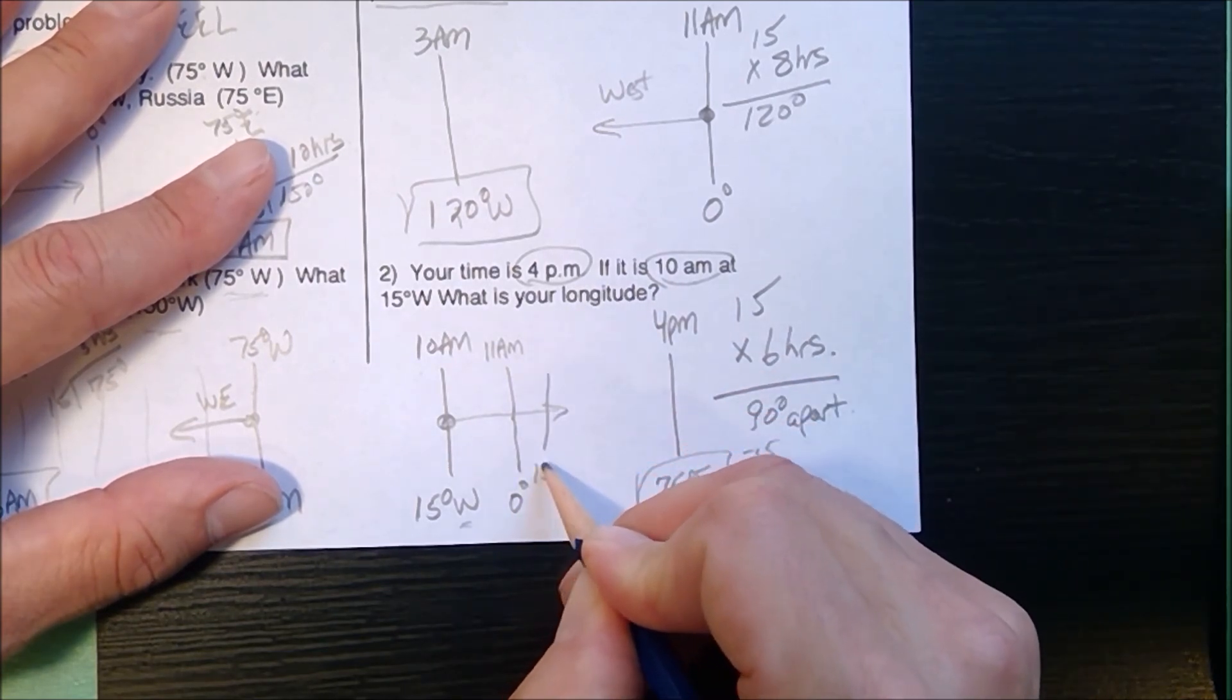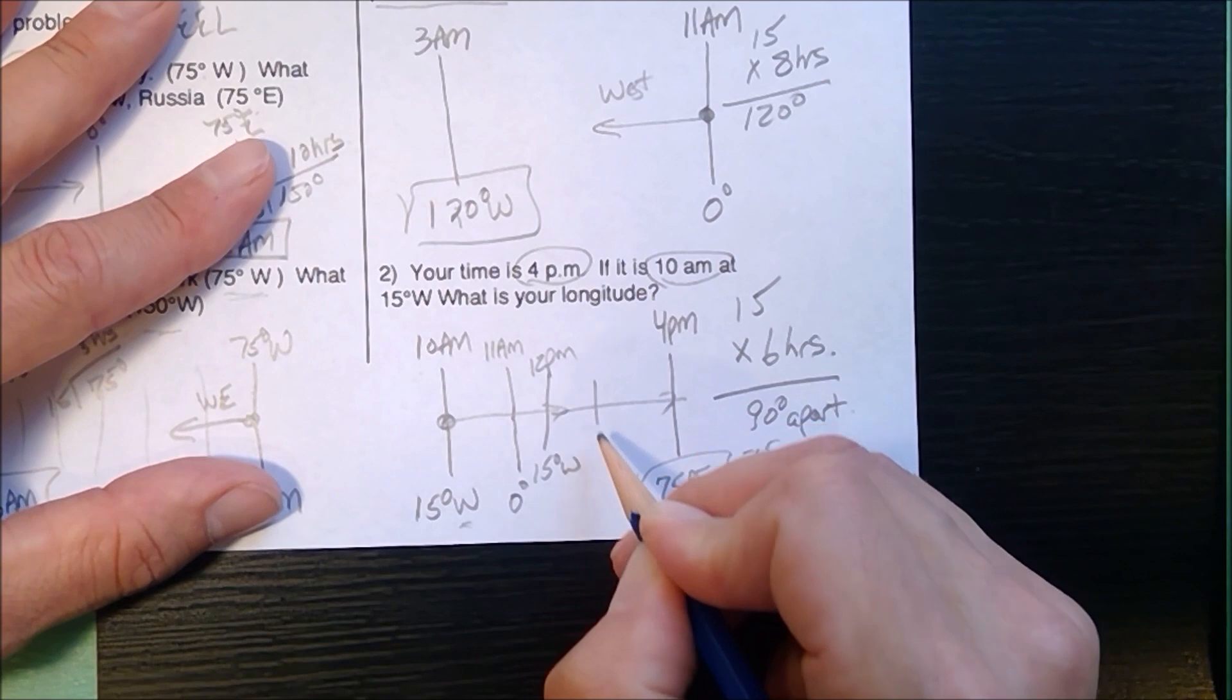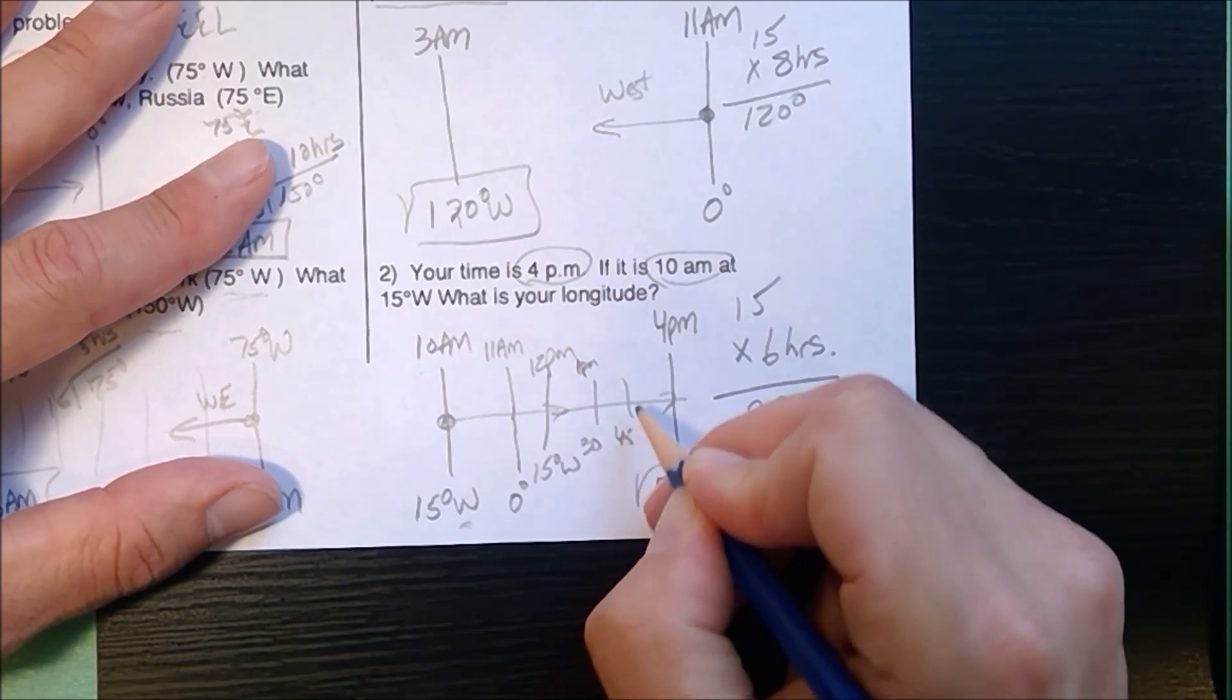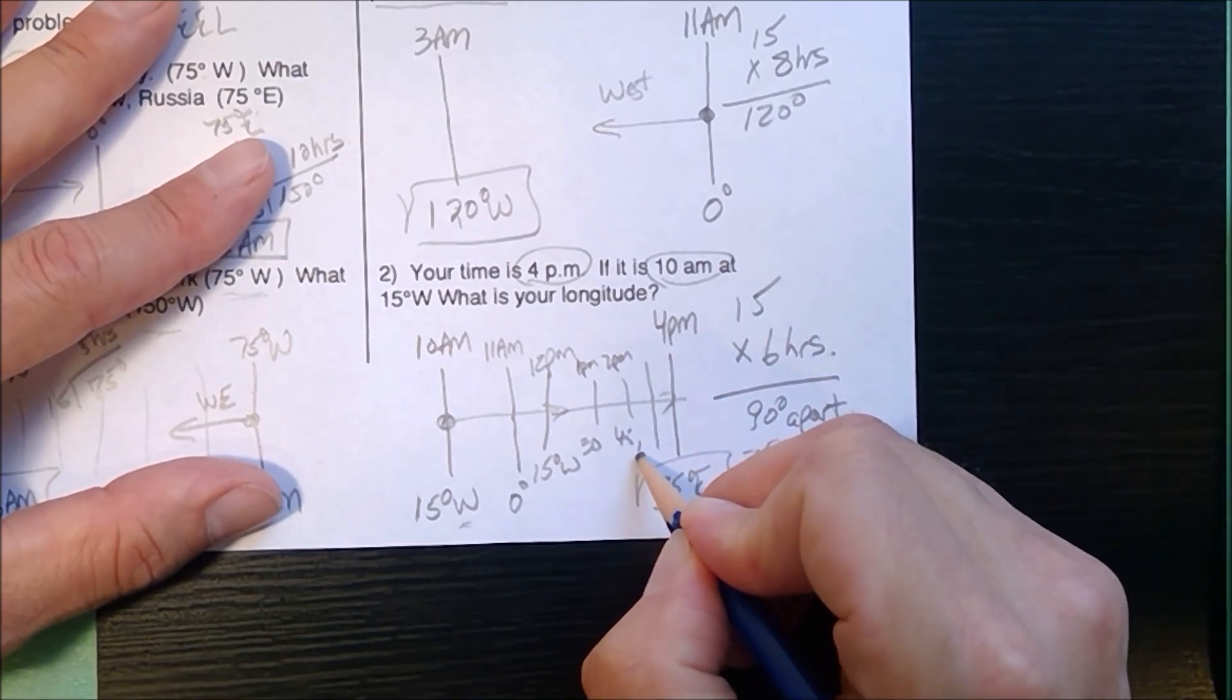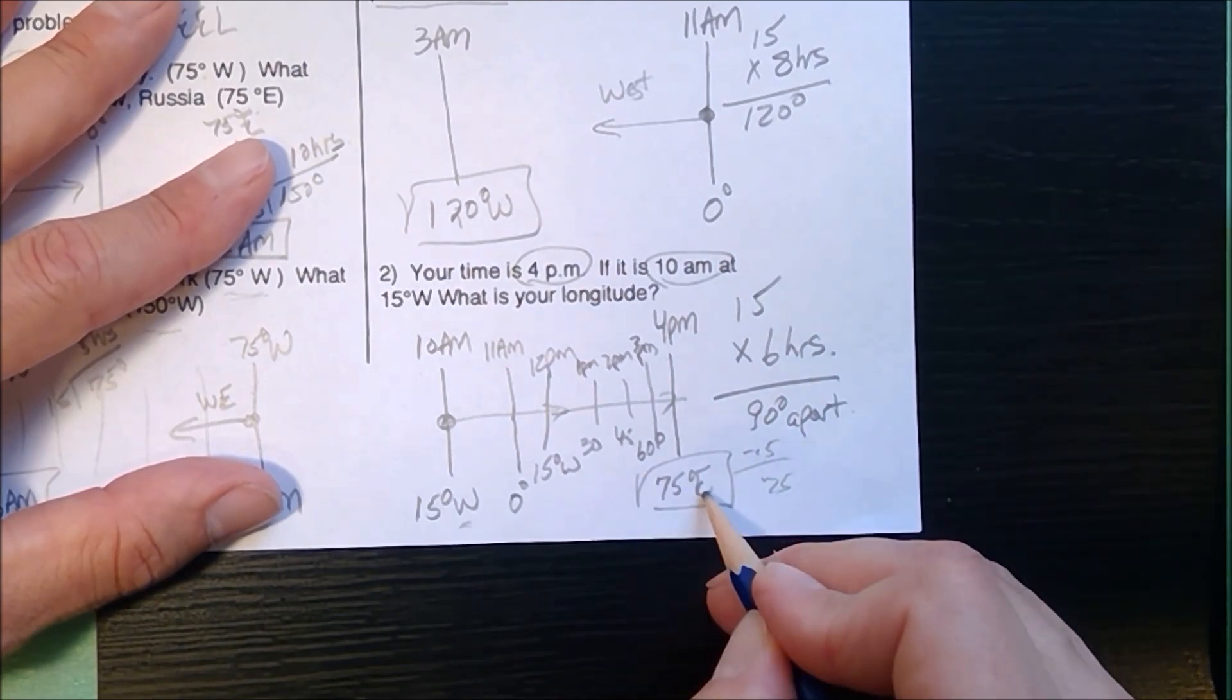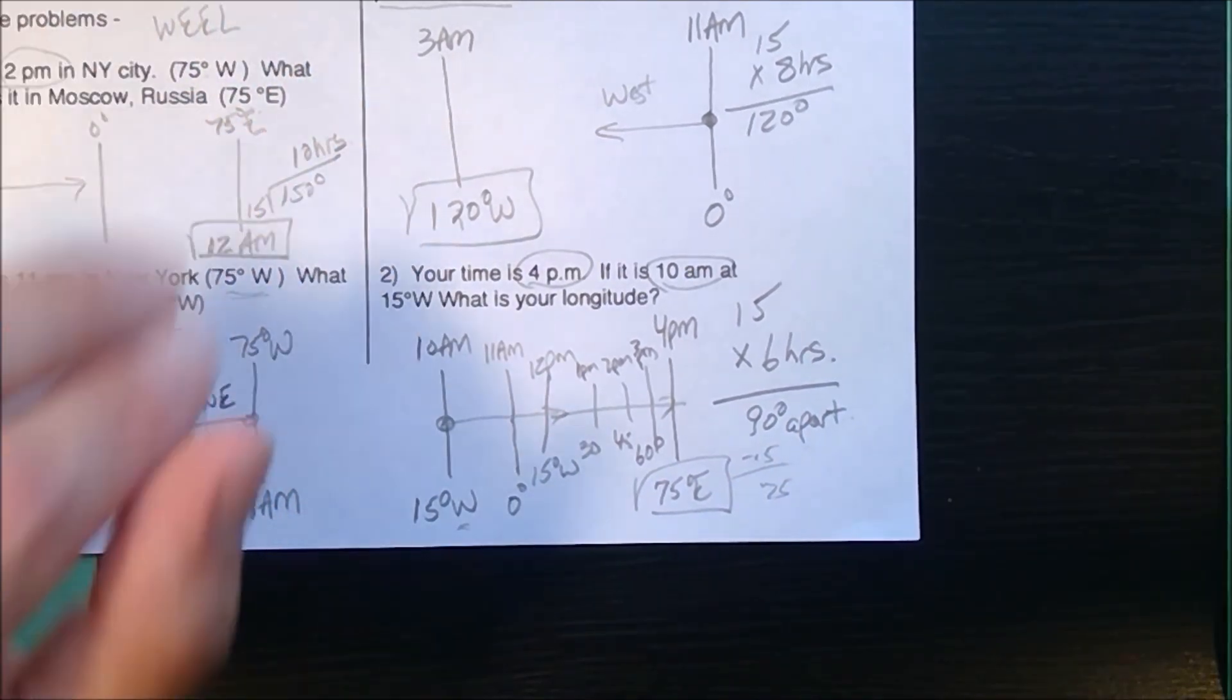If we wanted, 15 degrees west would be 12 p.m., 30 would be 1 p.m., 45 would be 2 p.m. This is why I don't like it because you run out of space. 60 degrees would be 3 p.m. So by the time you get to 75, you've moved 90 degrees. It's a six-hour time difference. It's going to be 75 degrees east.